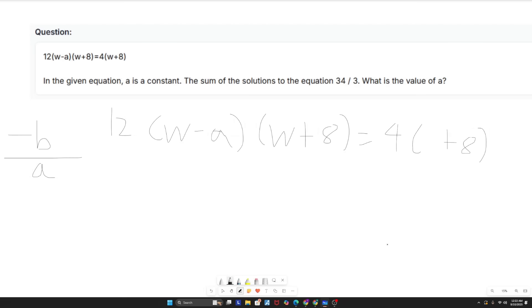All right guys, moving on to question number two. This question has showed up on the most recent August SAT and it has been tested a lot this year. So I do think this is a must know. In the given equation, A is a constant. The sum of the solutions to the equation is 34 over 3. Every time you hear sum of solutions, write down negative B over A because there's a very high chance you'll be using that formula. What is the value of A?